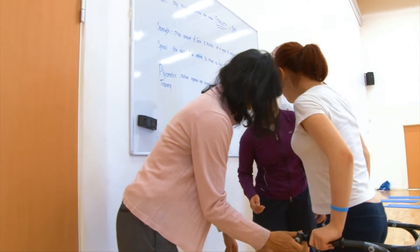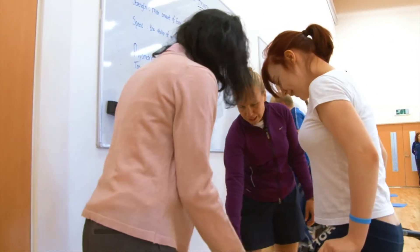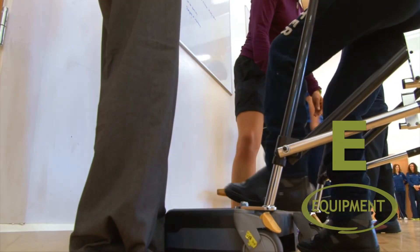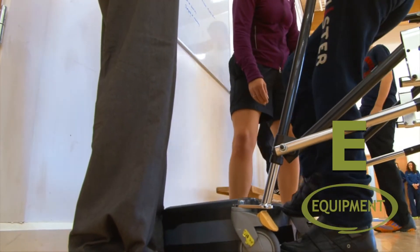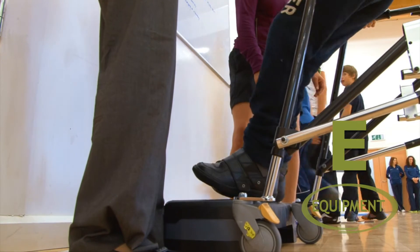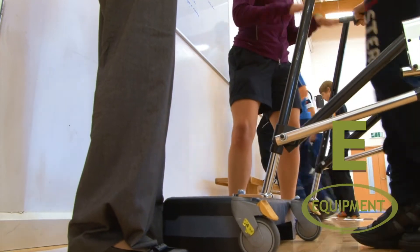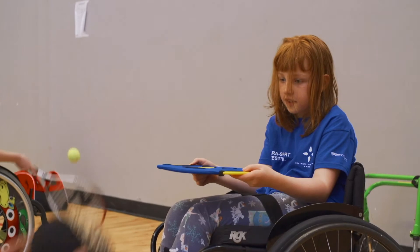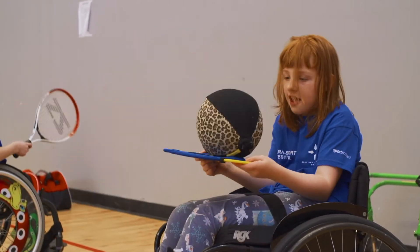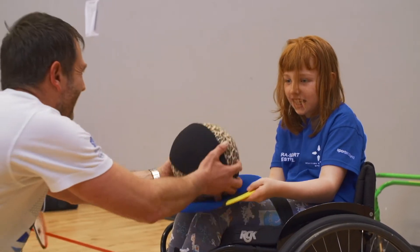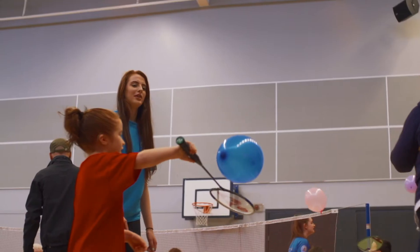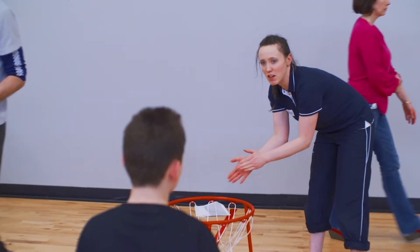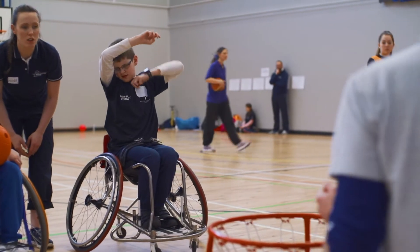Here you see the teacher modify the activity by adapting the equipment. Instead of using the bench, Jen modifies the equipment to use a lower step appropriate to Kira's needs but still providing a challenge. Other ways of adapting the equipment might be to use lighter or different coloured equipment, varying textures and shapes, perhaps including audio to help those with visual impairments.